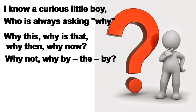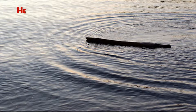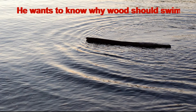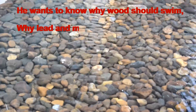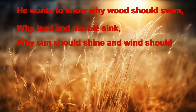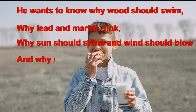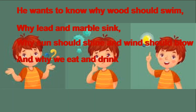He wants to know why wood should swim, why lead and marble sink, why the sun should shine and wind should blow, and why we eat and drink. In this stanza, the poet further describes the type of questions the little boy asks — like why does wood swim but lead and marble sink. This shows that his imagination is very strong.